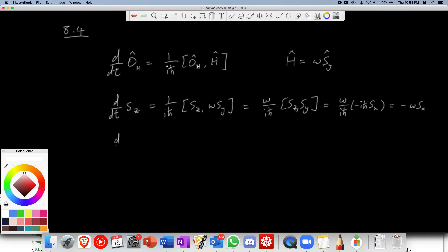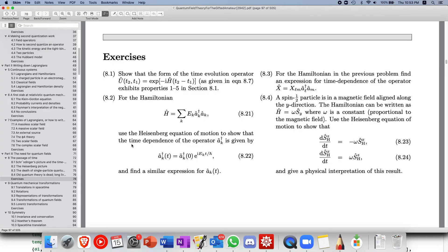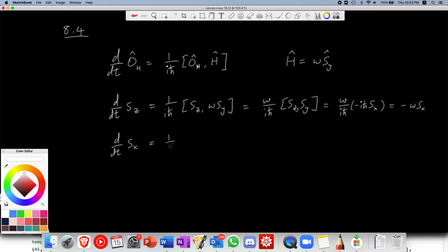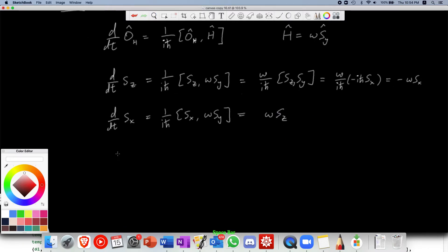Now the second result is just as easy. So it is s x equals to 1 over i h bar s x with omega s y and that is simply omega s z. So although the question doesn't ask us to do so, but if we compute the time evolution of the time derivative of s y, we simply get s y with omega s y and that is simply equals to 0.